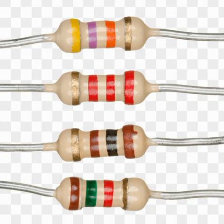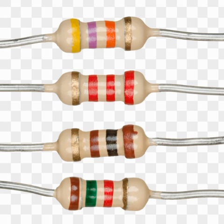A resistor is a passive element that opposes the flow of current through it. In other words, it opposes the flow of electrons through it. When connected in a circuit, the current will flow through the circuit and the resistor will oppose that flow.